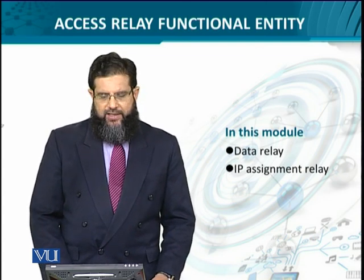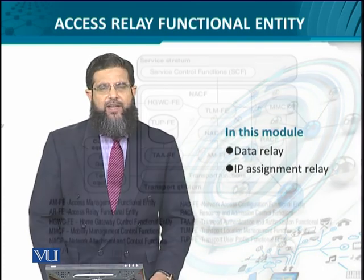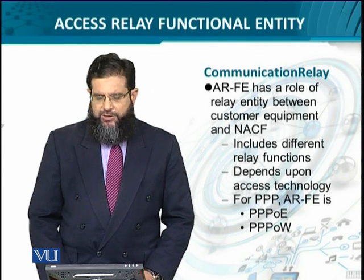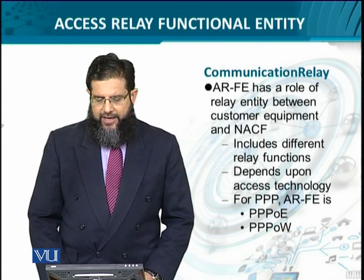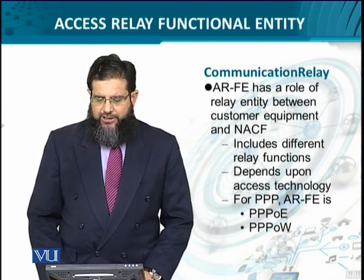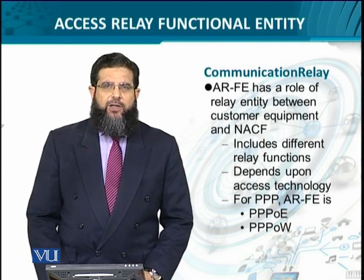The access relay functional entity manages both the data relay and the IP assignment relay. It is closely related to the access management functional entity and is part of the transport stratum, which determines what relaying mechanism is implemented between the two endpoints — the network side and the user equipment side. For data relay, it provides a mechanism to implement interaction between the customer equipment and the network attachment and control functional entity.